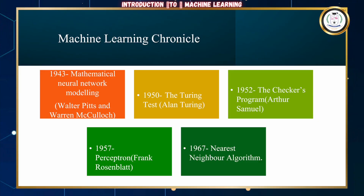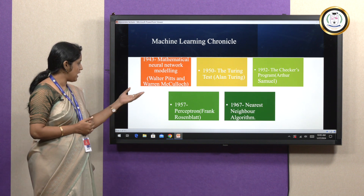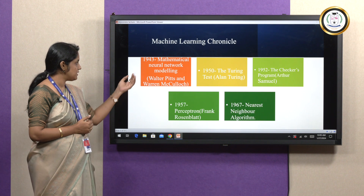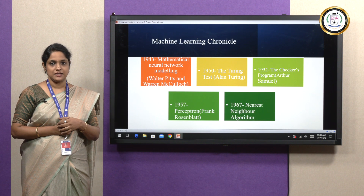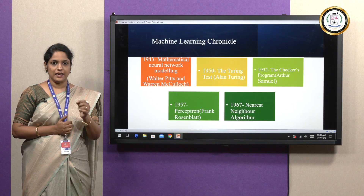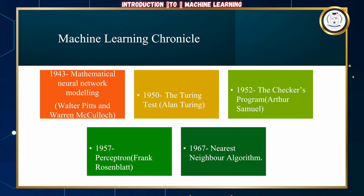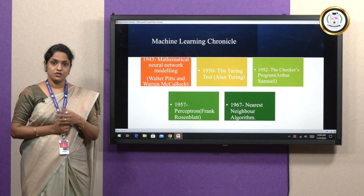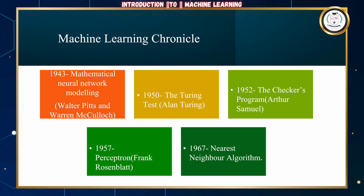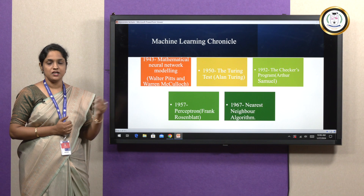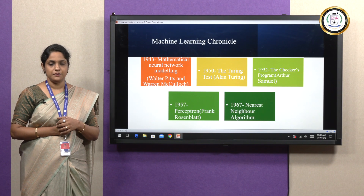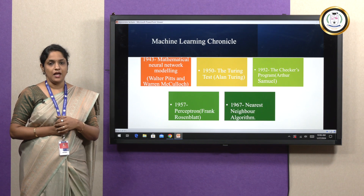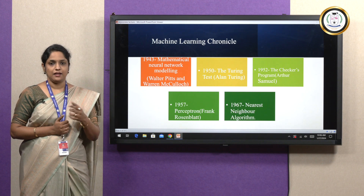Machine Learning Chronicle. In the past, many important events along the timeline made ML what it is today. In 1943, Walter Pitts and Warren McCulloch designed the first mathematical neural network model, which depicted the mimicking of human characteristics in a machine. In 1950, Alan Turing performed the Turing test, where he described that if a machine could convince a human being that it is human, then it is deemed intelligent. In 1952, Arthur Samuel proposed the Checkers program, written for IBM computers, where the system played Checkers and kept on improving after each game.